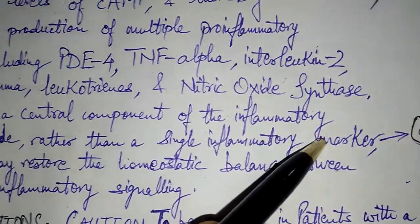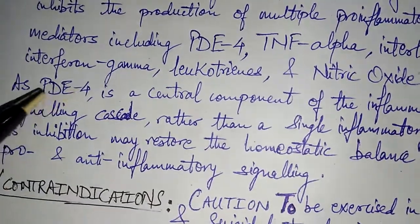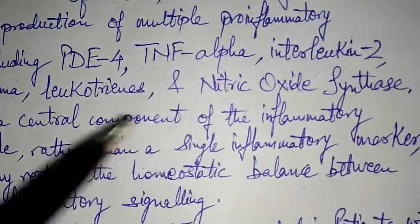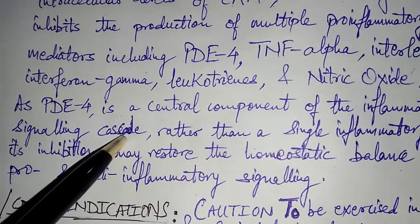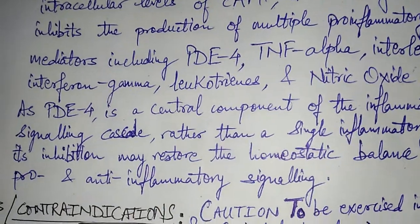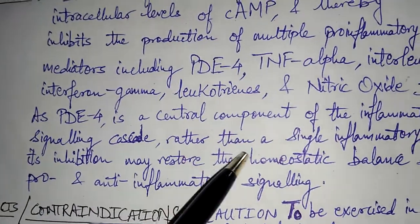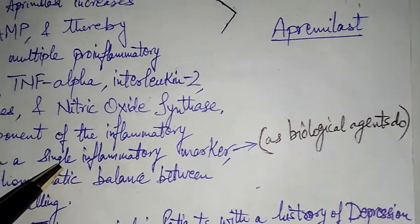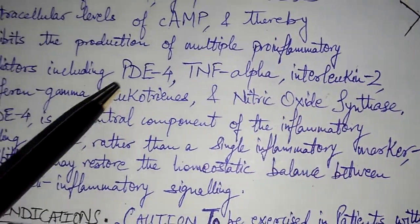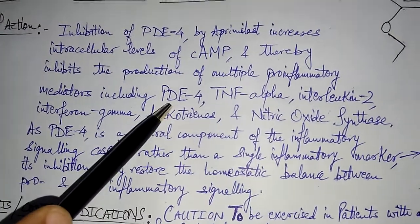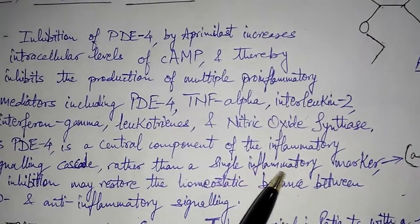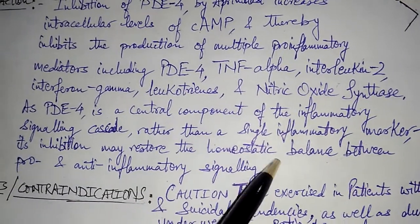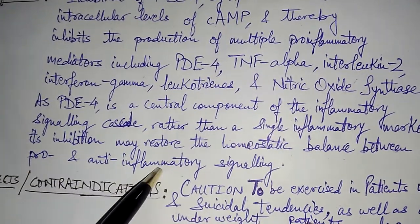PDE4 is a central — not peripheral — component of the inflammatory signaling cascade. Rather than interfering with a single inflammatory marker as biological agents do, Apremilast targets this central component, making it potentially more potent than biological agents that interfere only with single inflammatory markers. Its inhibition may restore the homeostatic balance between pro- and anti-inflammatory signaling.